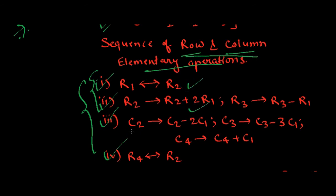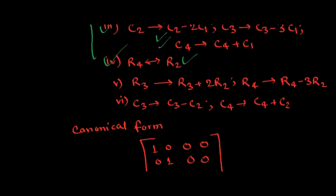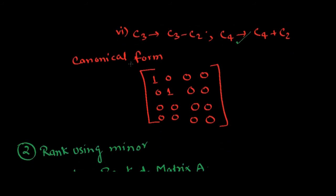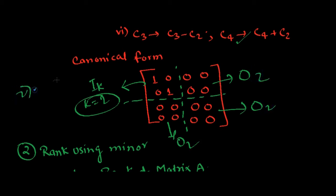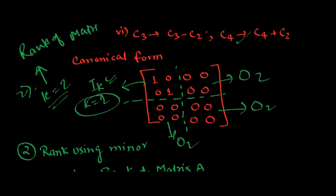We performed row operations, then column operations, then again row operations, then again column operations, and the final canonical form we got looks like this. You can see that this is our IK where K equals 2. So the order of the identity matrix is 2, and the remaining parts are zero matrices. On converting matrix A into canonical form, the order of the identity matrix — here K equals 2 — will be the rank of matrix A.